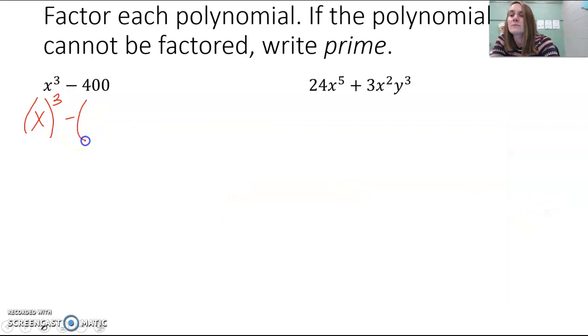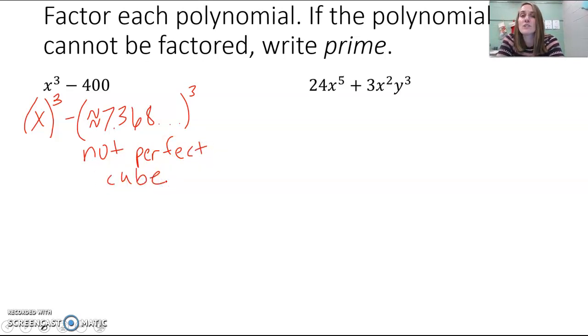And we can see that the cube root of 400 is not a perfect cube root, right? 400 would be like approximately 7.368 dot dot dot cubes. So this is not perfect. It's not a perfect cube, which means that we can't use the difference of cubes technique, right?